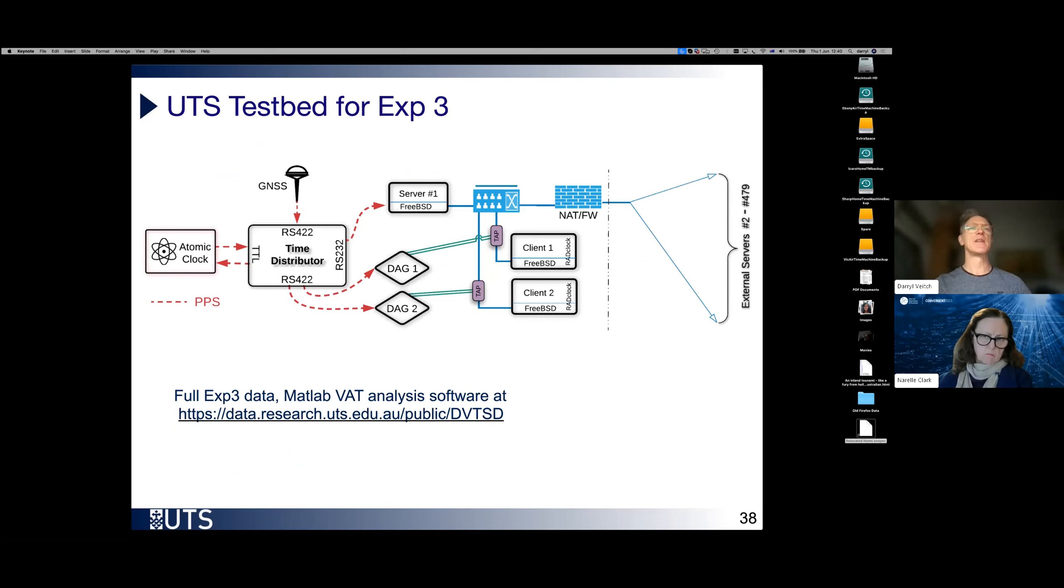This is the test bed used for that. It's more advanced than the previous one. This one is the test bed I have at UTS. Now we have an atomic clock as well as a GPS. We used the GPS to stabilize the atomic clock on longer time scales. This is the RS-422 signal synchronizing the DAG cards. And we have RADclock running here with low latency taps, tapping off the signals, load balancing of these two clients, and then sending out to 479 servers outside the network.